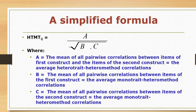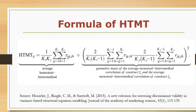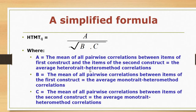Let me present this formula in a more simple way. I denote the numerator part as A, and the two components of the denominator as B and C. A is the mean of all pairwise correlations between items of the first construct and the items of the second construct. For example, if you have two constructs X and Y, you correlate all items of X with all items of Y and take the average of those correlation coefficients to get the value of A.